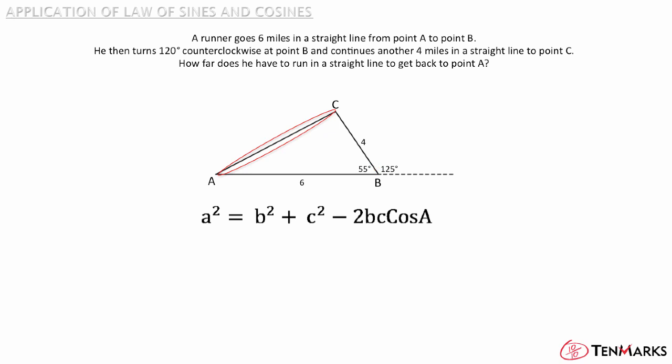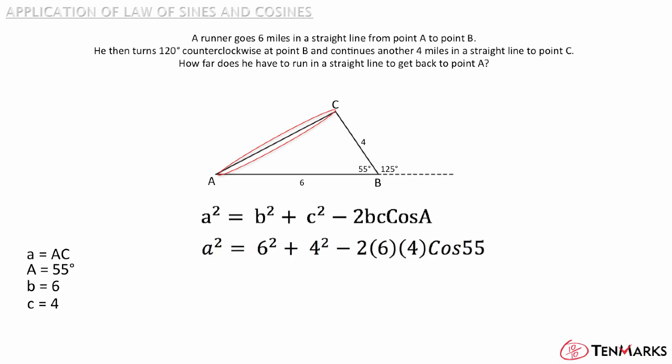Now you have the information you need to solve the problem. Since the side you're looking for is opposite the angle you have, side AC equals A and angle A equals 55 degrees. Let B equal 6 and C equal 4. Plug these values into the equation, use a calculator to simplify the right-hand side, then take the square root and find that the missing side is 5 miles long.